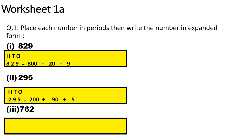Part 2 is 195. You will do it similarly like part 1. For example, 295 equals 200 + 90 + 5. Part 3 is 762. You will write H, T, O, then write 762 equals 700 + 60 + 2.